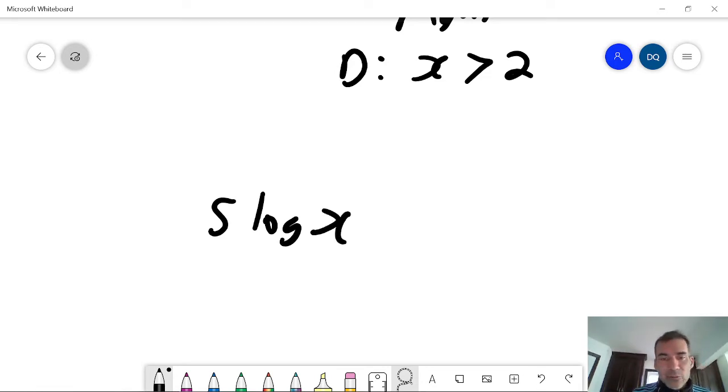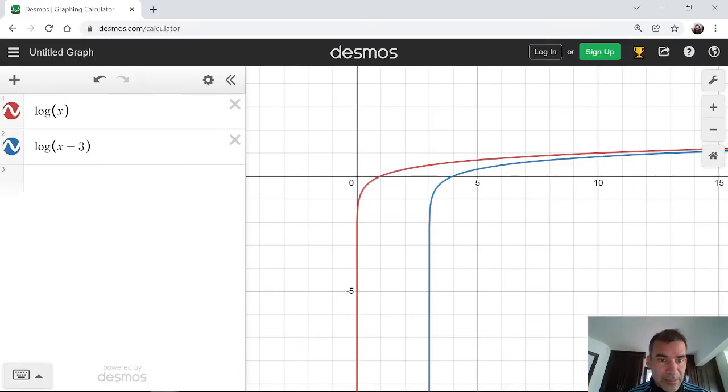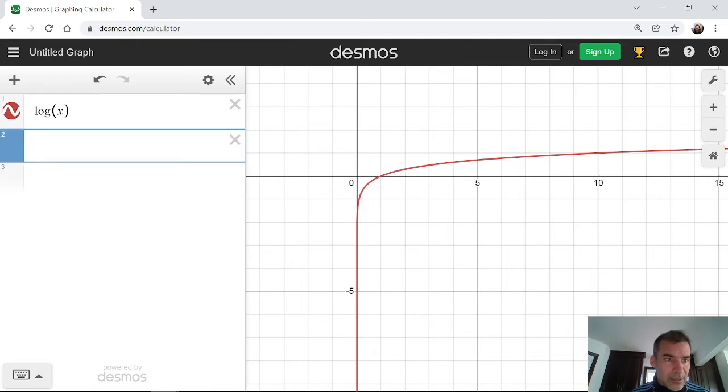5 log x will look just like log x, only be stretched vertically. So it's 5 times as steep. So again, here's log x. And now 5 times the log of x.